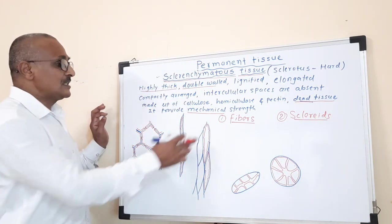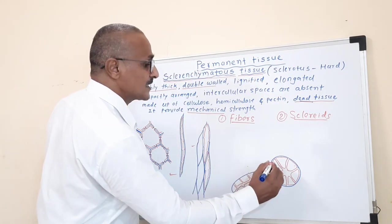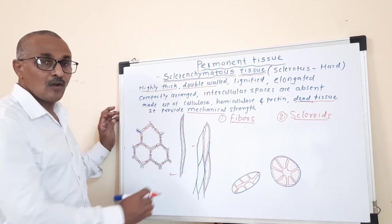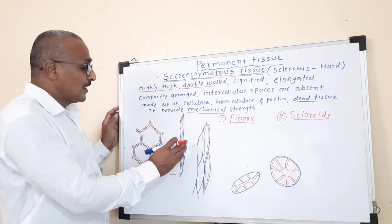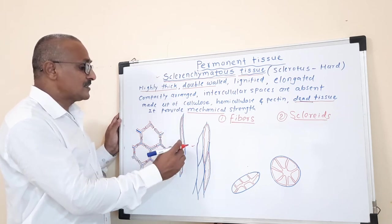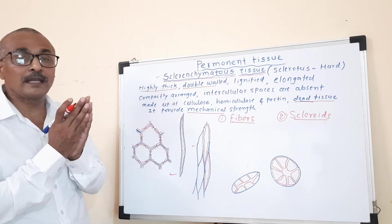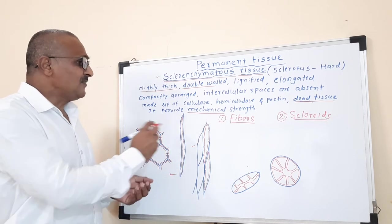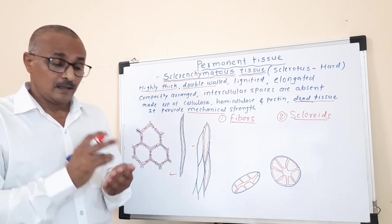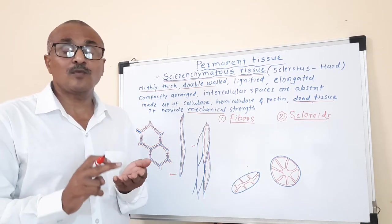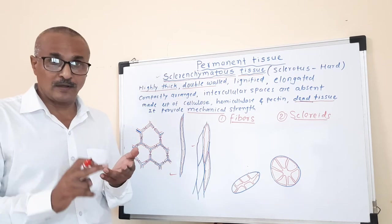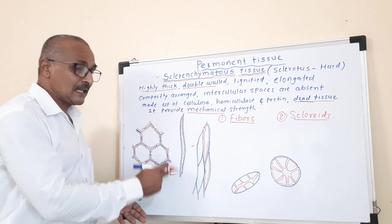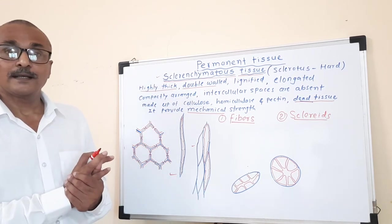Fibers are elongated and highly lignified. Due to the deposition of thickening, the cell lumen of fibers becomes very narrow — the cavity is very narrow, and the fibers interlock with each other. Fibers are present inside the xylem tissue as well as in the phloem tissue, so they are called xylem fibers or phloem fibers. Scleroids are sometimes associated with the xylem as well as with the phloem.